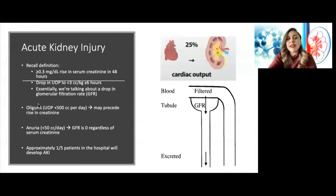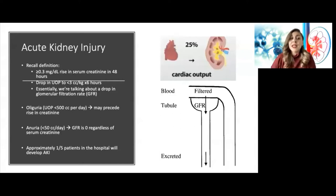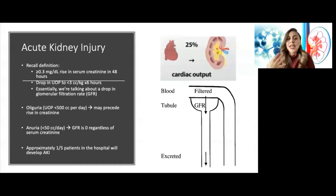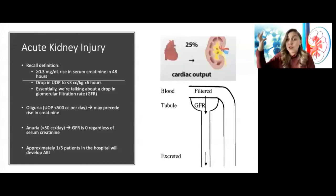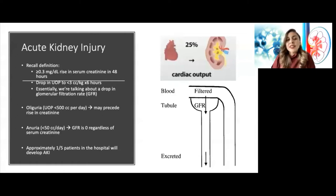To get more technical, we subcategorize AKI as non-oliguric or oliguric, meaning urine output less than half a liter per day, or anuric AKI. This is helpful because an anuric patient has a GFR of zero, regardless of what the serum creatinine says — because serum creatinine takes a while to be produced and may take a few days to peak. If the patient is not making urine, the GFR is zero.